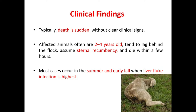Coming to the clinical findings. Typically death is sudden without clear clinical signs. Affected animals are often 2–4 years old, tend to lag behind the flock, assume lateral recumbency, and die within a few hours. Most cases occur in summer and early fall when liver fluke infection is at its highest.